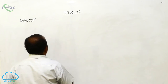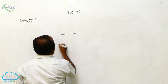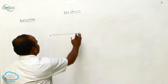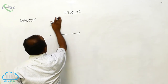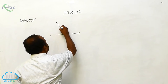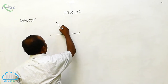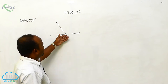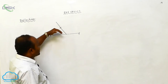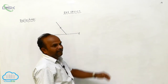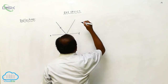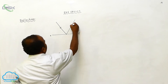Let us consider this is the obstacle, XY. There is a homogeneous medium. There is a light ray — this is the light ray. The light ray faces the obstacle right here; light is falling here. It traverses back into the same medium. This is called reflection.